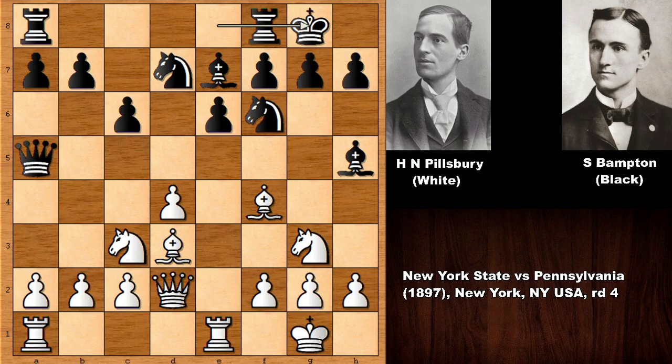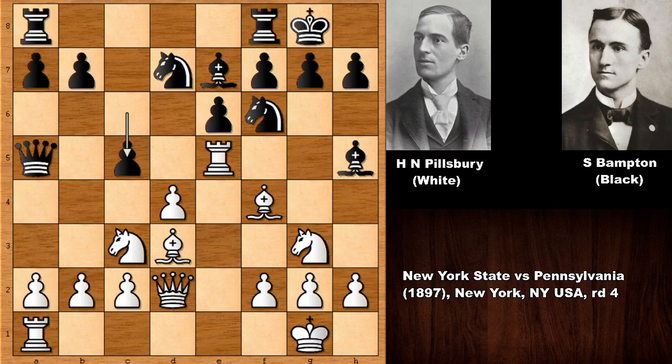In this position, Pillsbury played a surprise move — Rook to E5! What a move, throwing the Rook into the fire. Bampton plays C5, not capturing the Rook. You can see that the Rook on E5 is forking the Queen and the Bishop, and if Black doesn't react, capturing the Bishop is possible after defending the Queen.